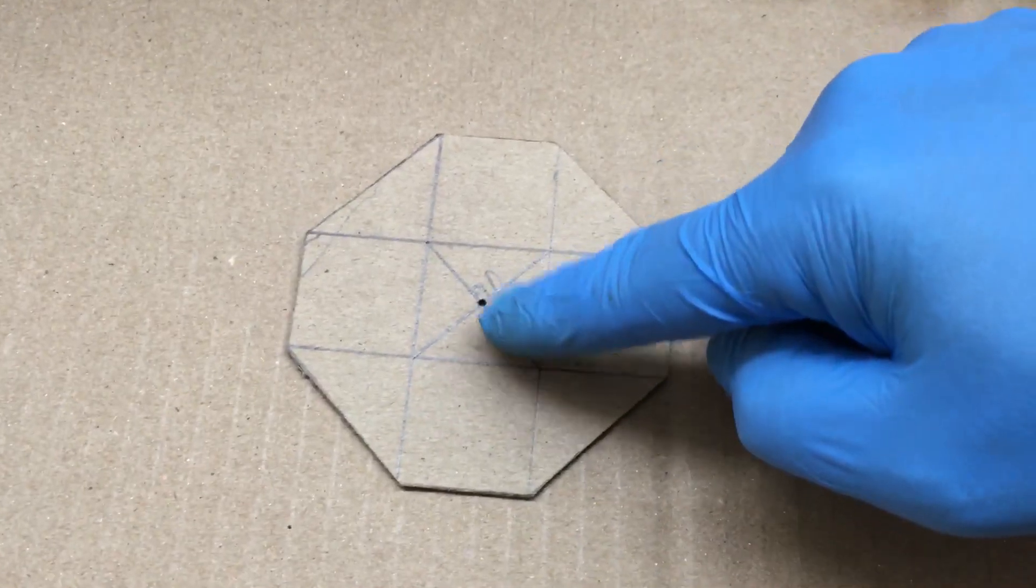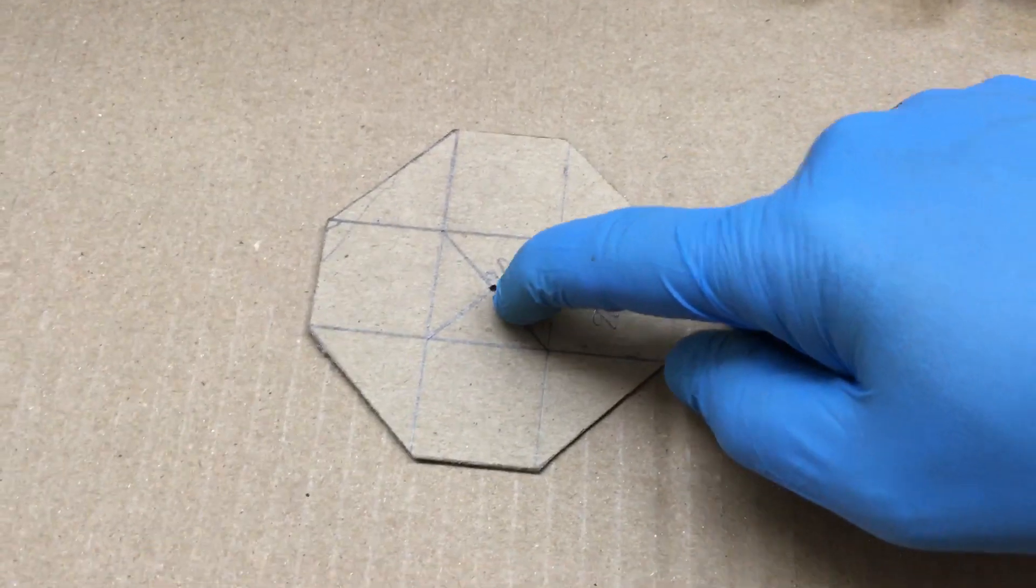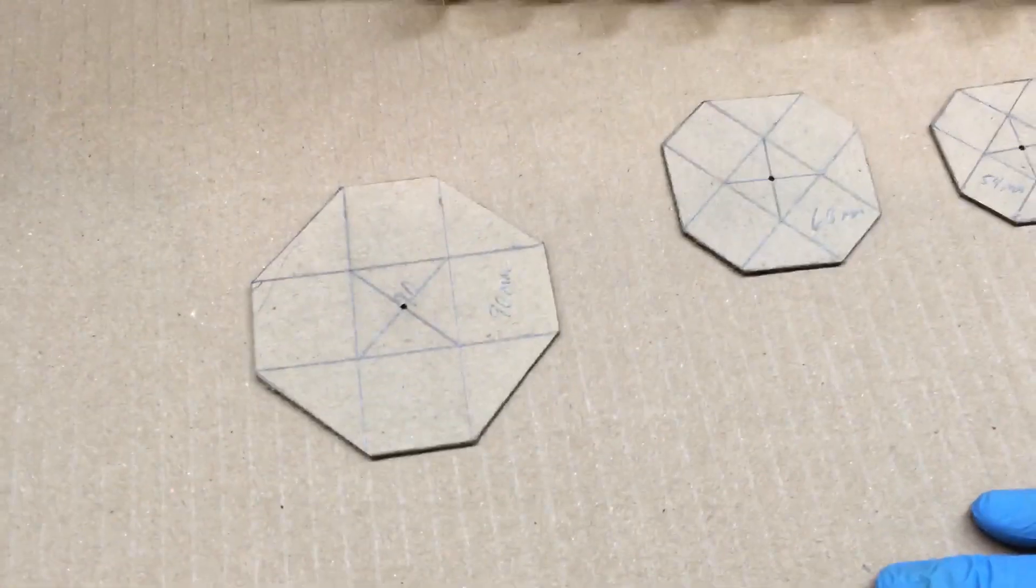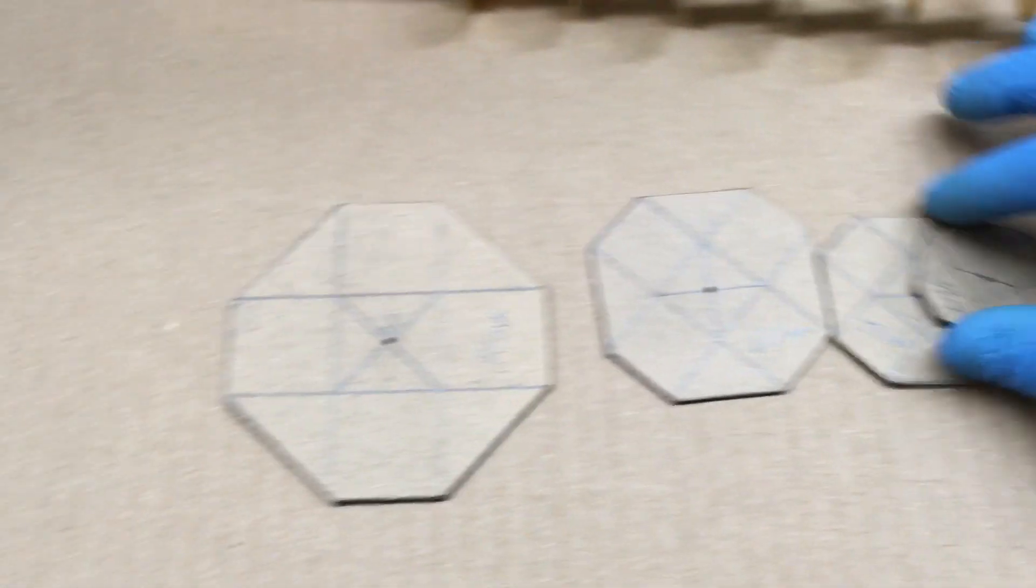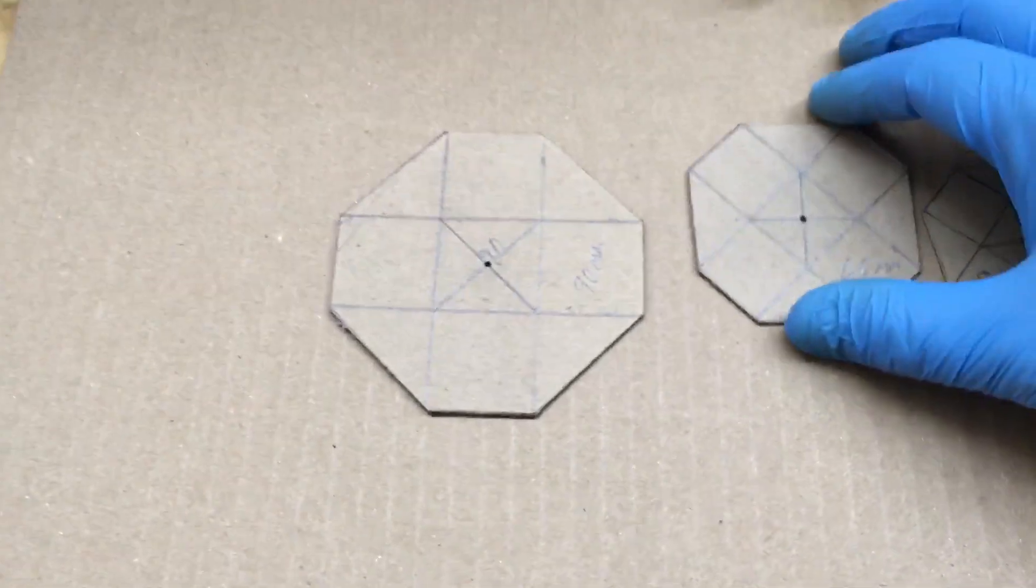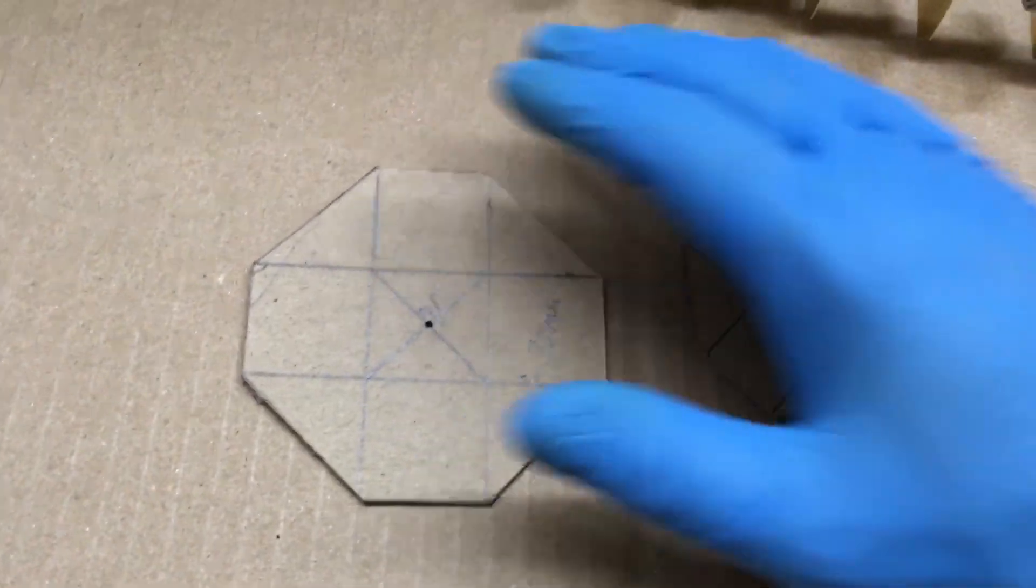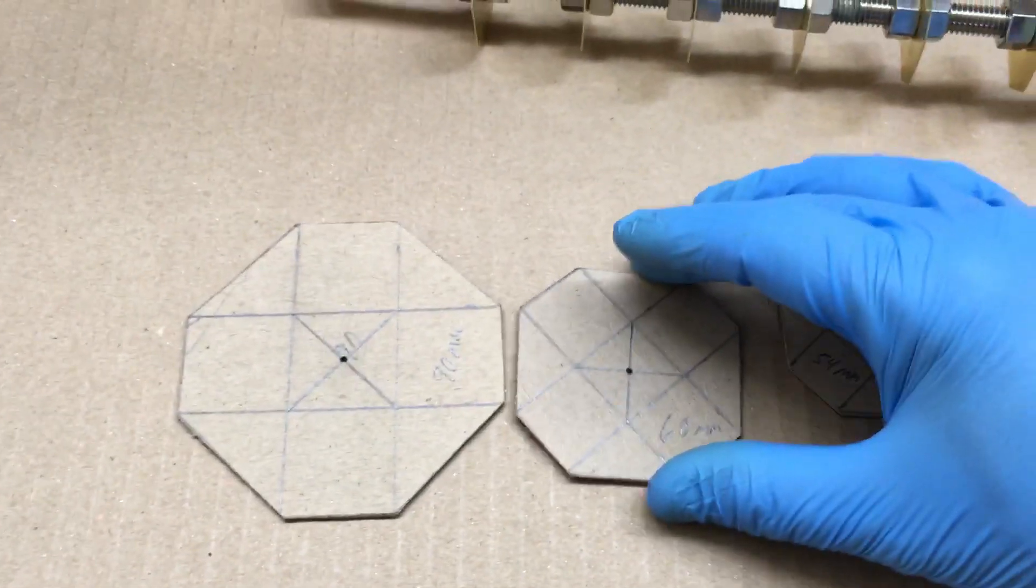I put an X in there to get my center point of the octagon. It worked out pretty well for all of them. They're not perfect, but doing them by hand this way, it worked out somewhat decent, so I can't complain.